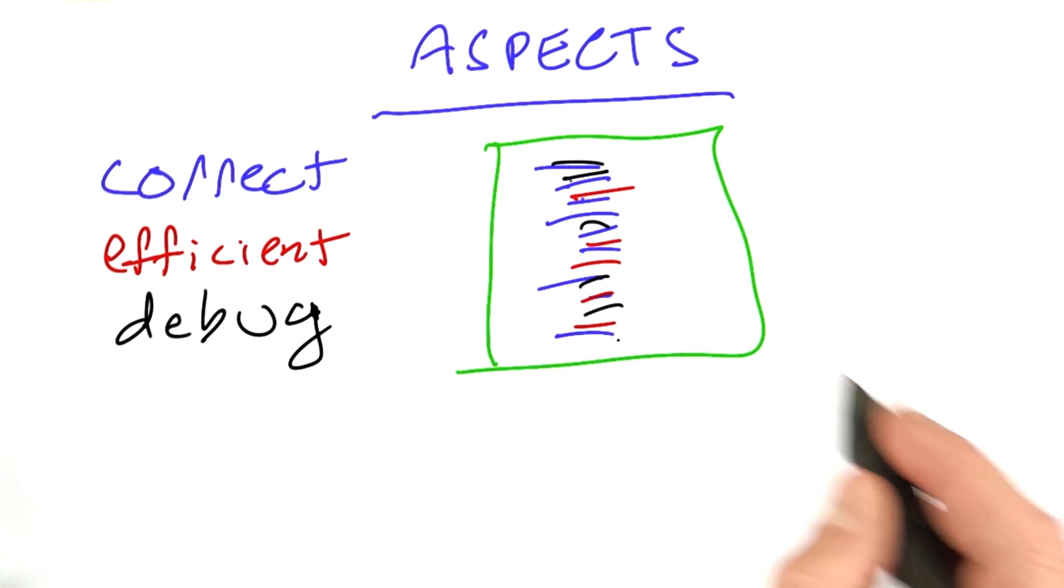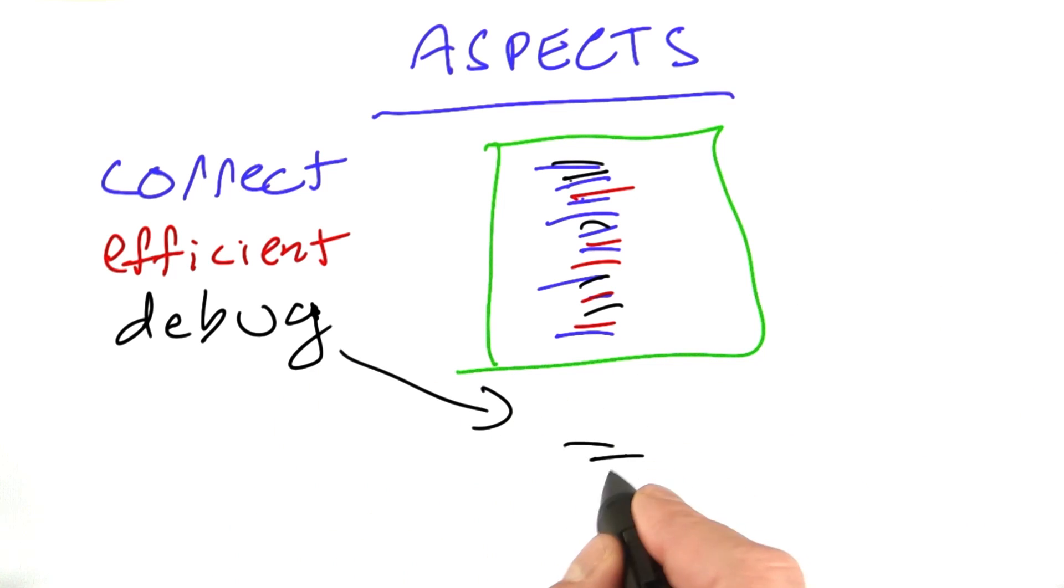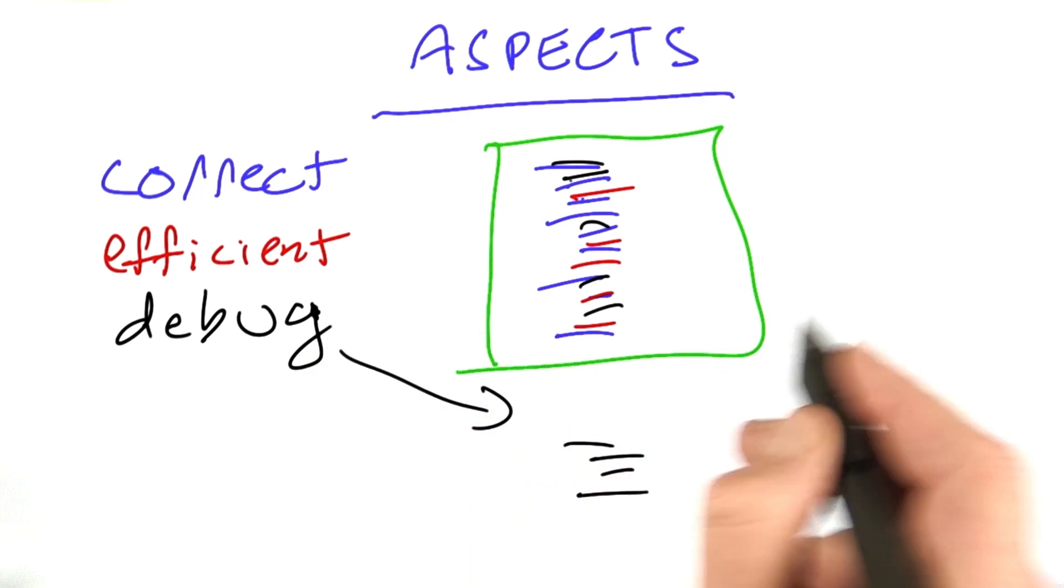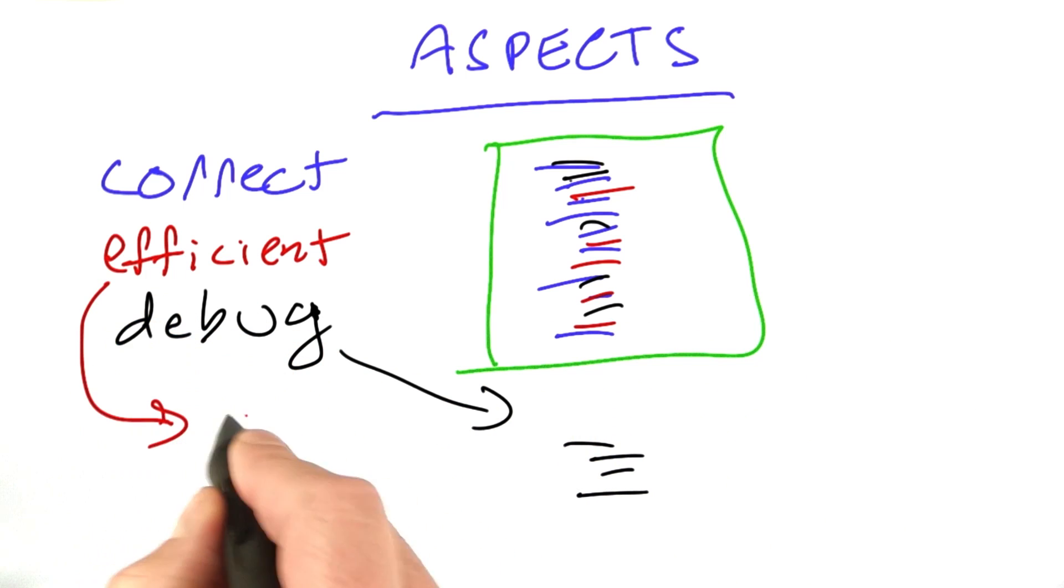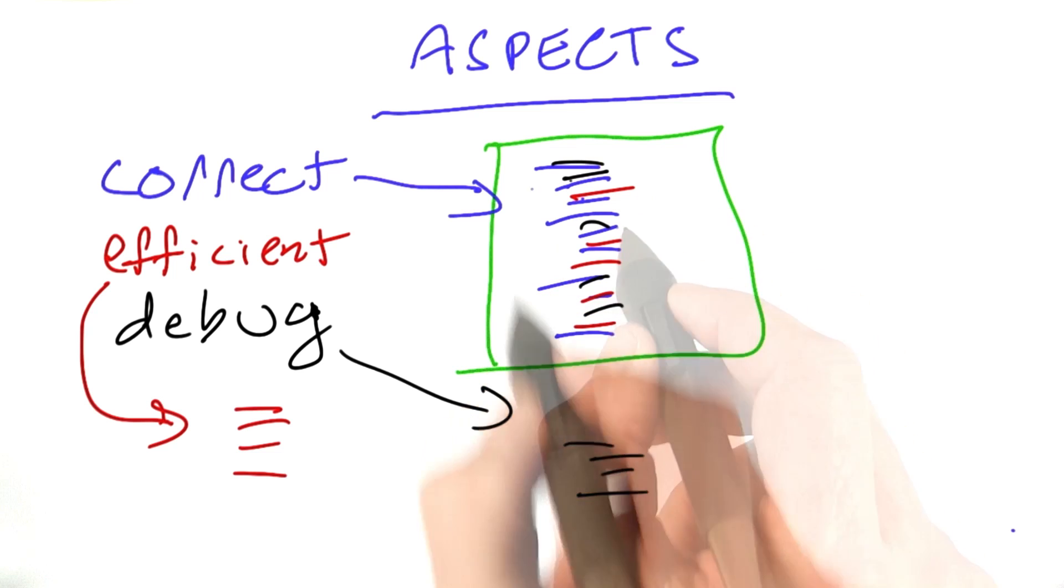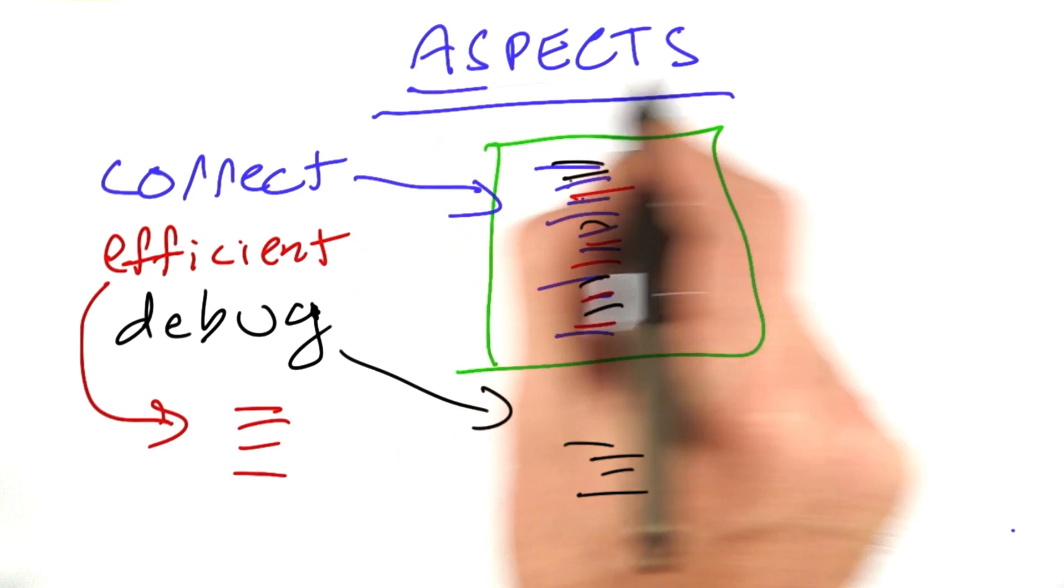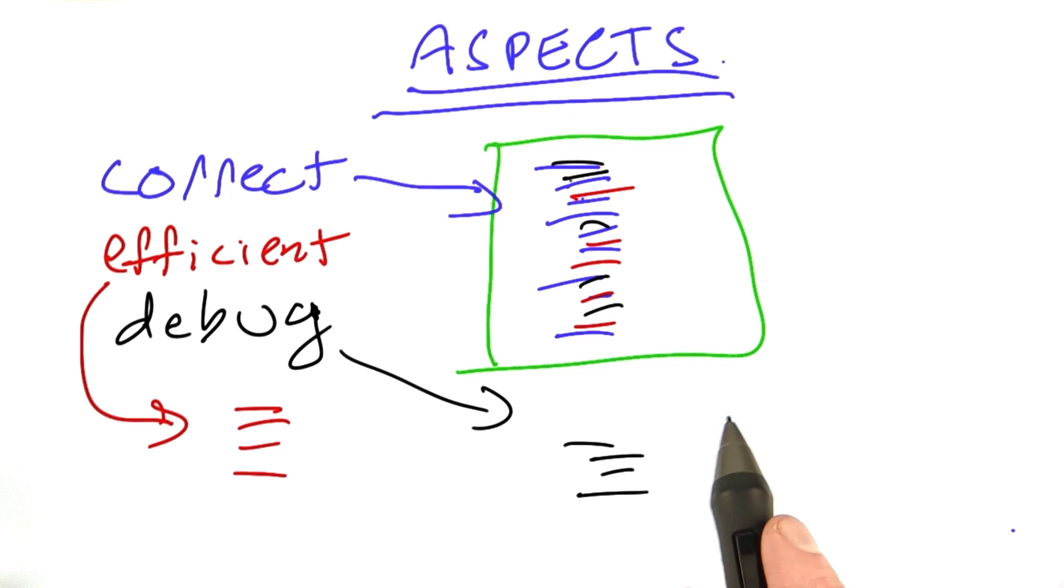Wouldn't it be nice if we could break those out so that some of the debugging statements were separate, some of the efficiency statements could live someplace else, and the main correctness program could stay distinct from the other parts. This idea is called aspect-oriented programming, and it's an ideal that we can strive for.